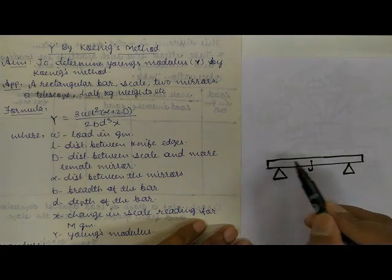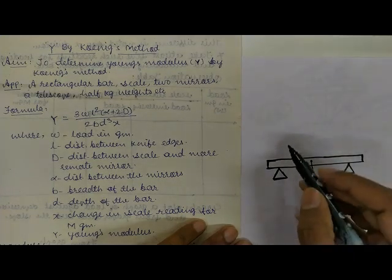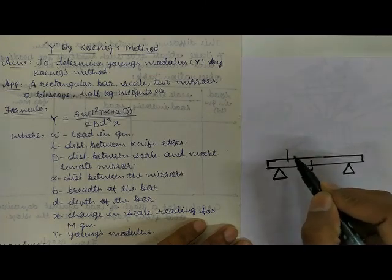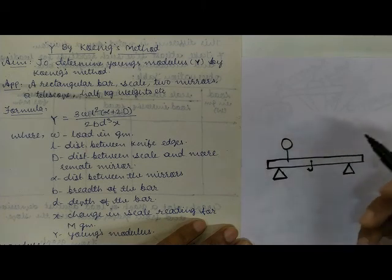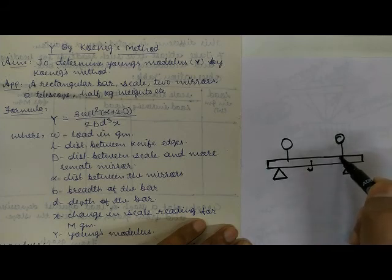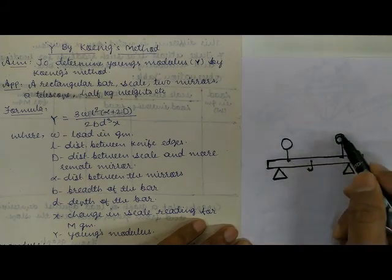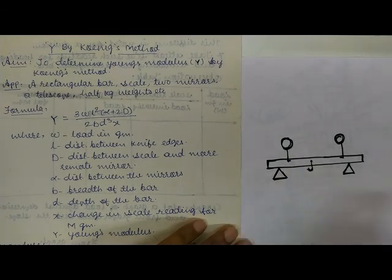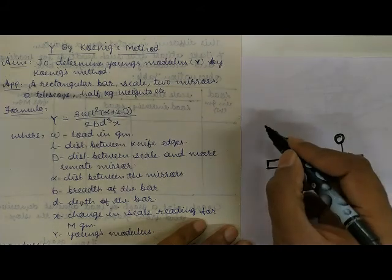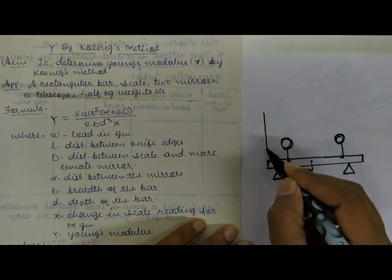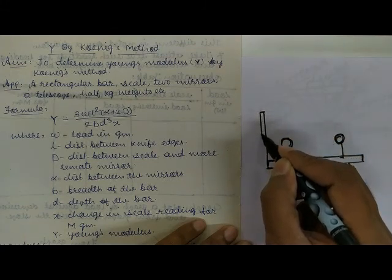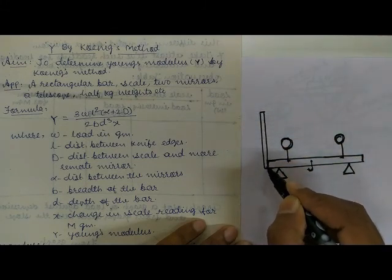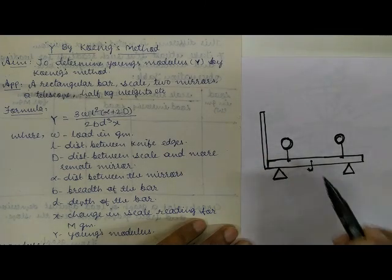On this beam there are two movable mirrors — one mirror placed here and another placed there, not exactly at the knife edges but a little away from them. These two mirrors are mounted on the beam and are removable and movable; we can move them as required. We also arrange one vertical scale very close to one end of the beam — a normal meter scale with readings from one centimeter to 100 centimeters.